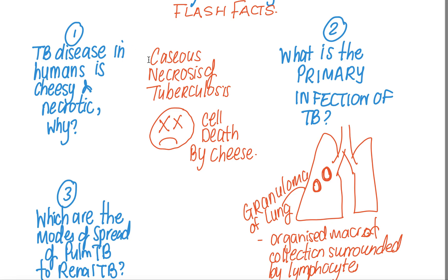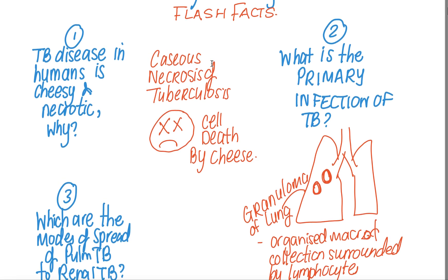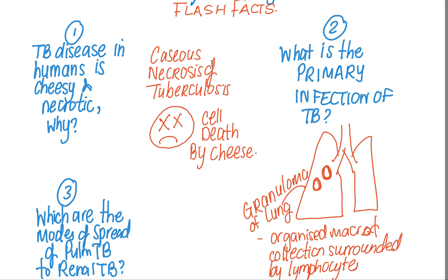It's a caseous necrotic disease. Caseous necrosis — necrosis means cell death and caseous means cheese-like. So it's a necrotic disease; cell death by cheese is a funny way to remember it. Essentially, cells inside your body are being destroyed by this cheese-like caseous necrosis. And whenever there is caseous necrosis, we can also expect calcium to deposit, with the secondary complication of calcification.